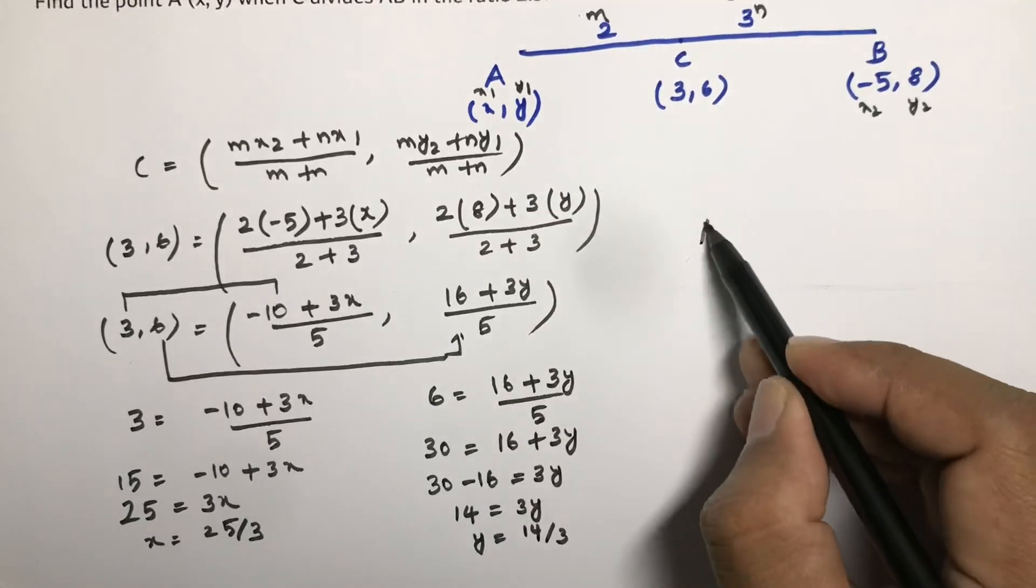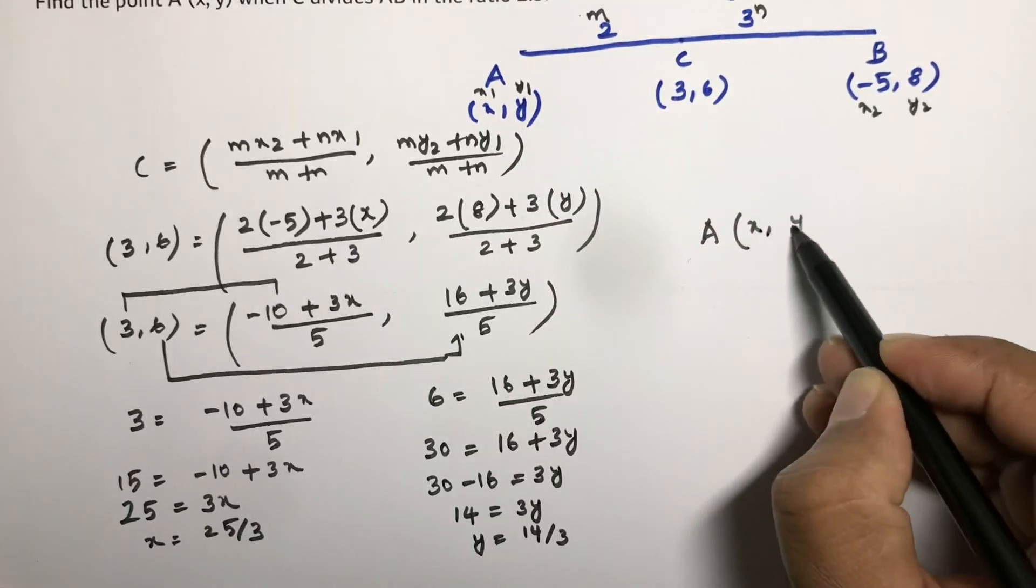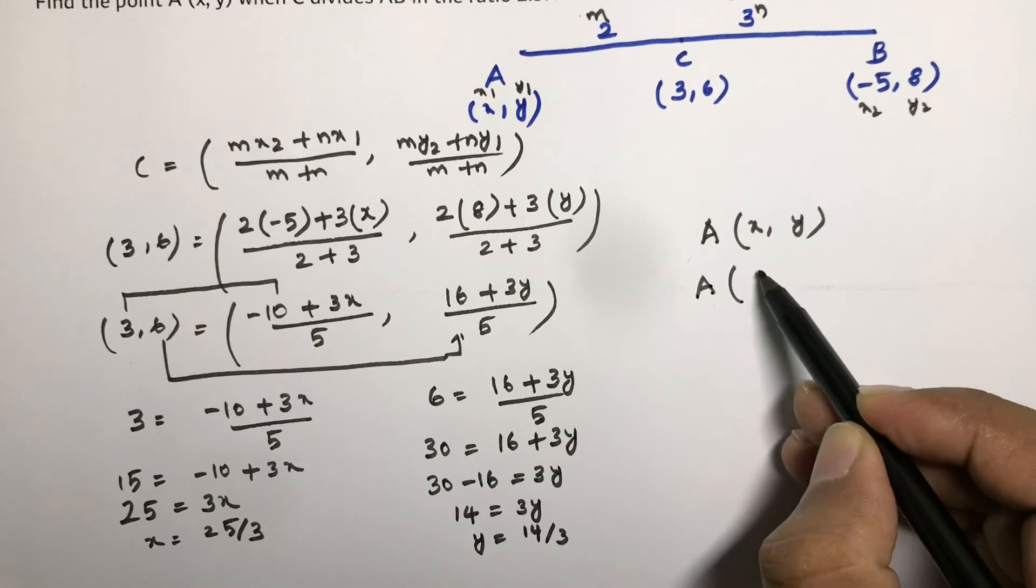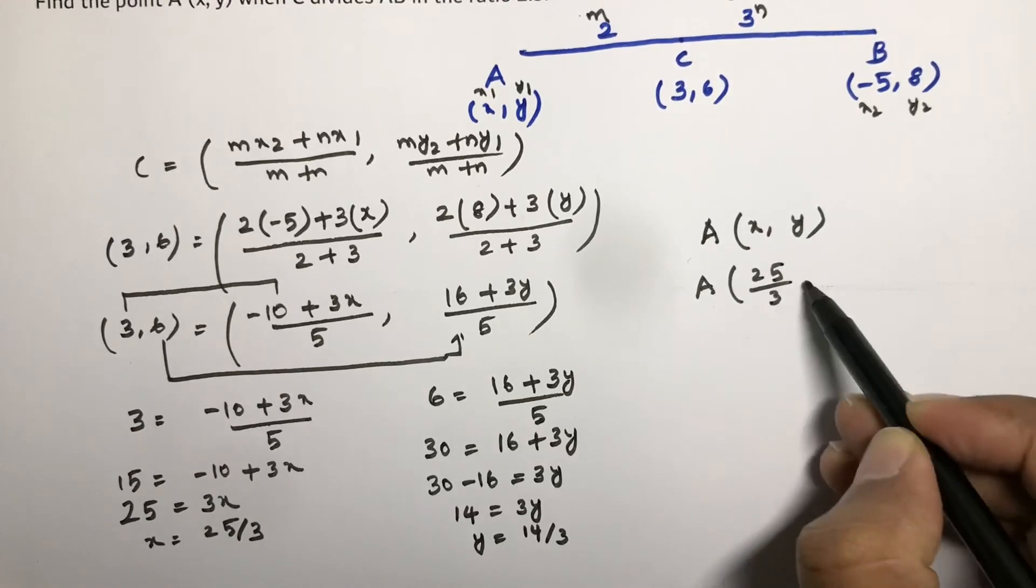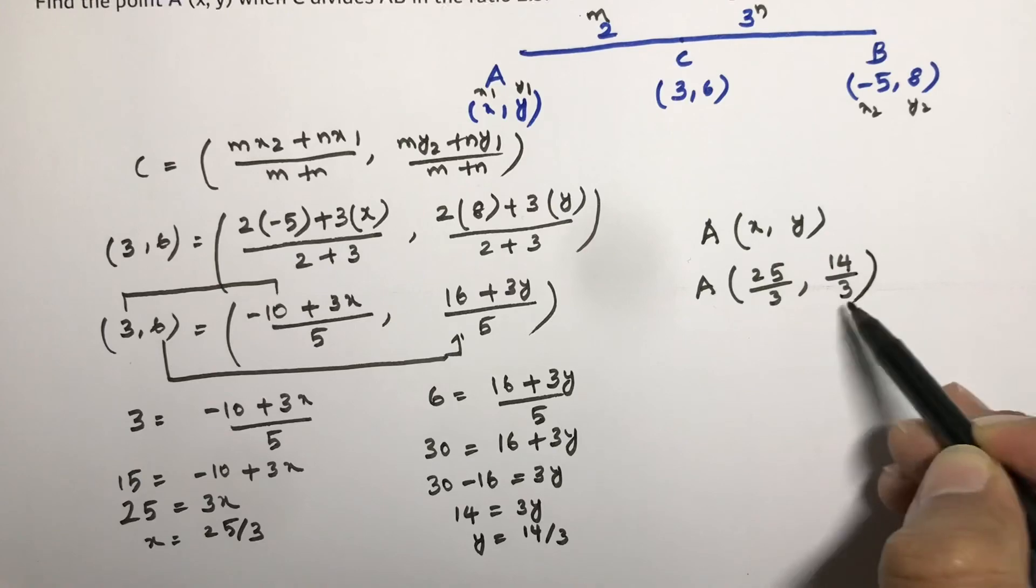Therefore the point A is X Y. So X value is 25 by 3 and Y is 14 by 3.